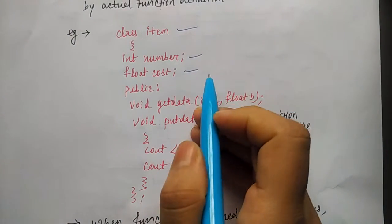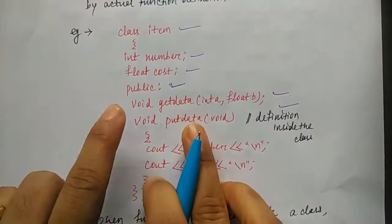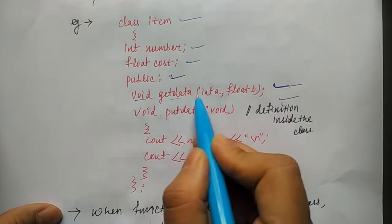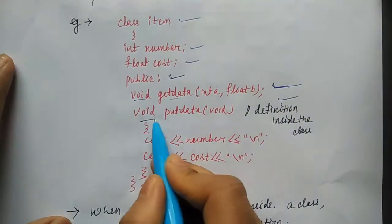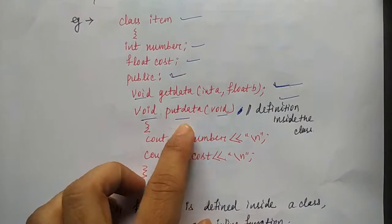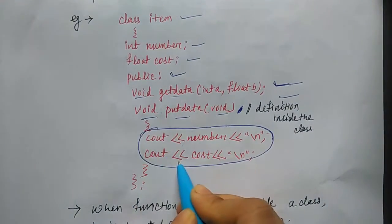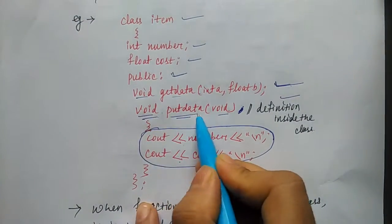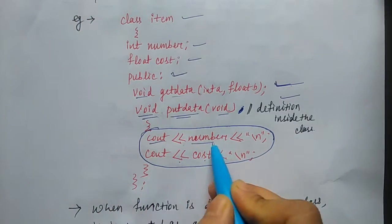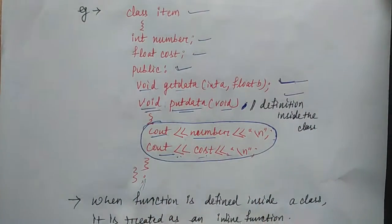Here we have a class called 'item' with two private data members. In the public section, we have two member functions declared: first, 'void get_data' is only declared. Then 'void put_data' is defined within the class itself — its body contains: cout number newline, cout cost newline, and the function closes. Then the class is terminated.